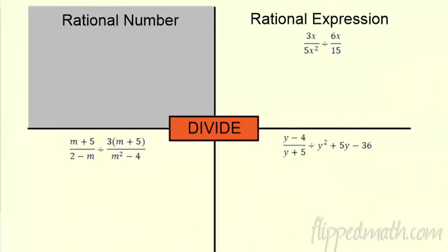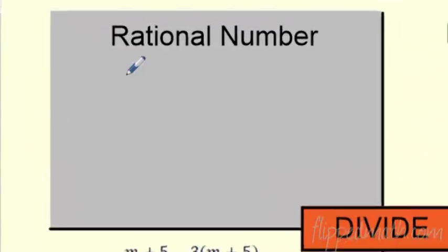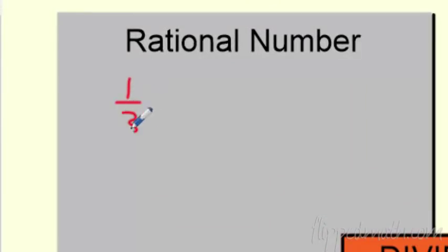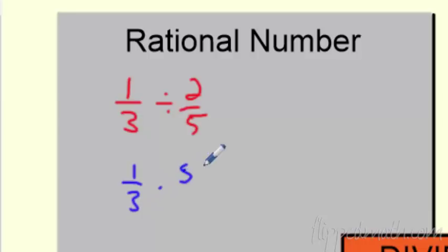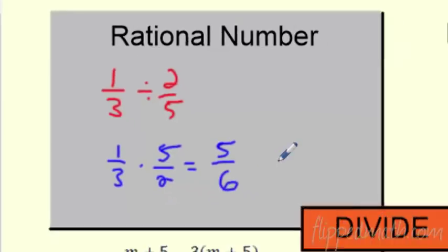Almost there — let's talk division. We're going to do rational numbers, same idea. Like, if I had 1 third and I'm going to divide it by 2 fifths. If I'm going to divide fractions — remember old school — the rule is division is multiplication. You're going to flip the second fraction and multiply. So, it really becomes 1 third times 5 halves. Then you do your multiplication rules: multiply across the top, multiply across the bottom. You're good to go.